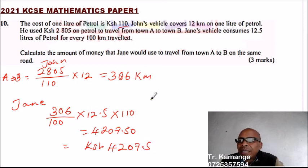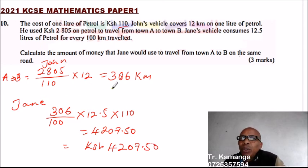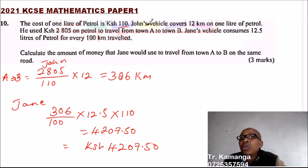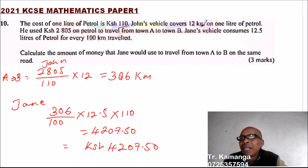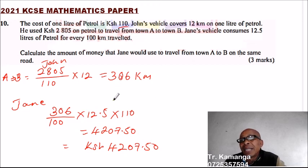So that is how you get to the answer. The tricky part is how to get the number of kilometers covered by John. You use the information — that is 12 kilometers per liter, the amount he used, the cost of one liter, and the 12 kilometers covered by one liter of petrol — then use that information to compute the amount Jane would use to cover the same distance. By doing that, you'll be able to get three marks. It's just a simple question.